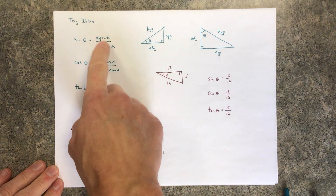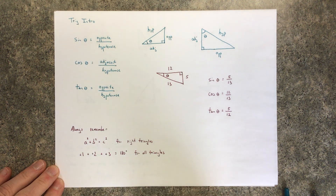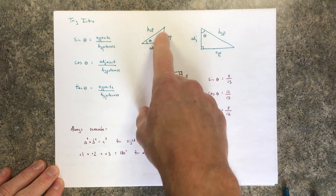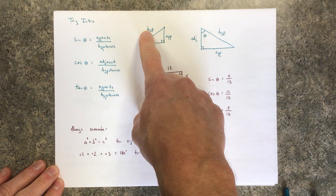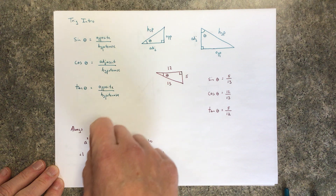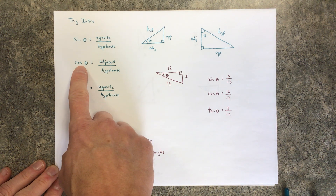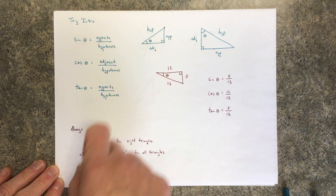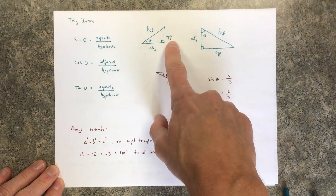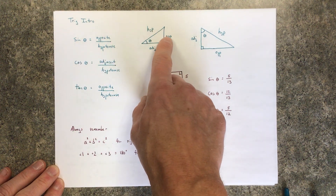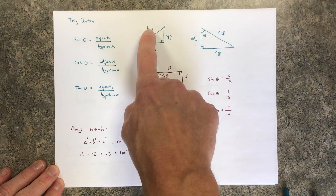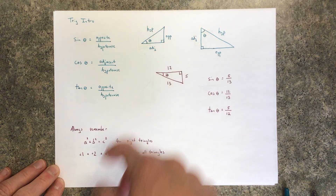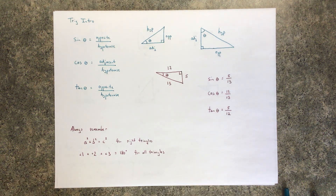Sine takes a look at the opposite and hypotenuse ratio — meaning for a particular triangle, there's a particular ratio given the angle between how long the opposite side is to the hypotenuse. There's a different ratio for the adjacent to the hypotenuse, and that's what cosine does. And tangent looks at opposite to adjacent, so now you have all three sides related to each other.